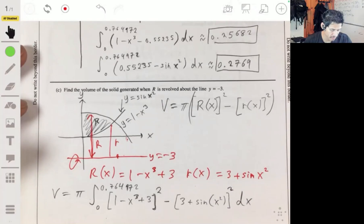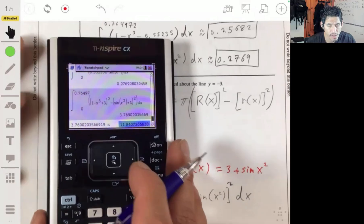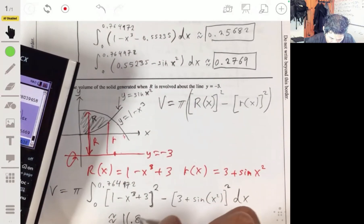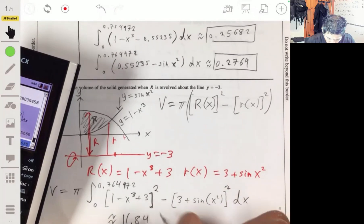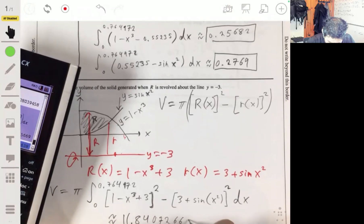In either case though, 3.769 times pi, we'll end up getting about 11.84.